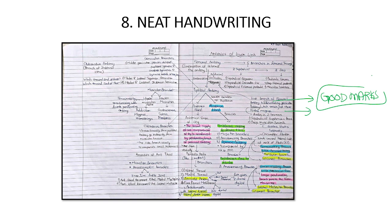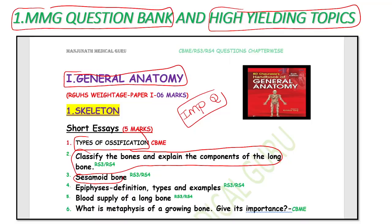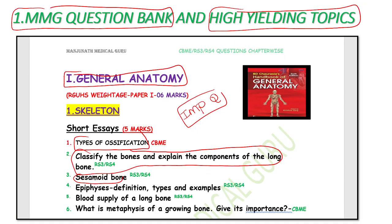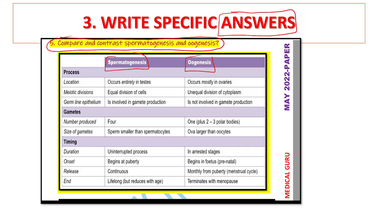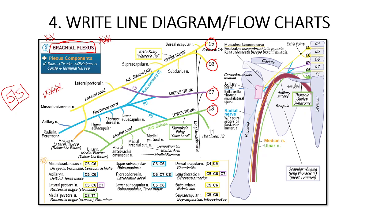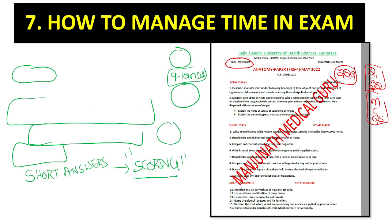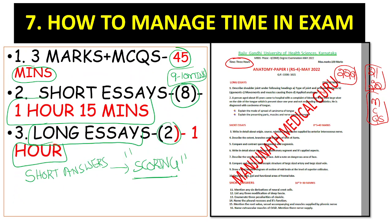So to recap the study tips to get distinction in anatomy: first, know the distribution of topics; second, know the important topics in each chapter; third, go through all CBME papers in the app — revise at least one paper every day, there are eight papers; fourth, write specific answers in the exam; fifth, write line diagrams and flowcharts; sixth, label diagrams; seventh, include clinical correlations; eighth, manage time in the exam — start with three-mark questions, then five-mark, then ten-mark; and finally, maintain neat handwriting.